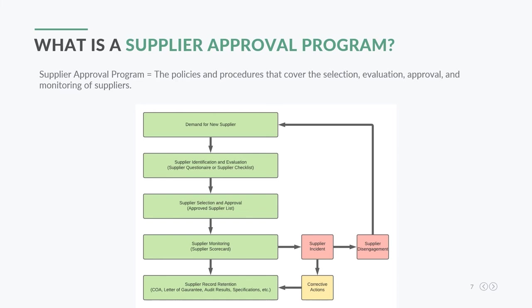It starts with the demand for a new supplier, then you move to supplier identification and evaluation. Typically there are two documents used at this point: a supplier questionnaire and a supplier checklist. The questionnaire asks about all the different practices at that supplier's location — making sure they have a HACCP plan, third-party certifications, a COA for the product, test results, and things like that.